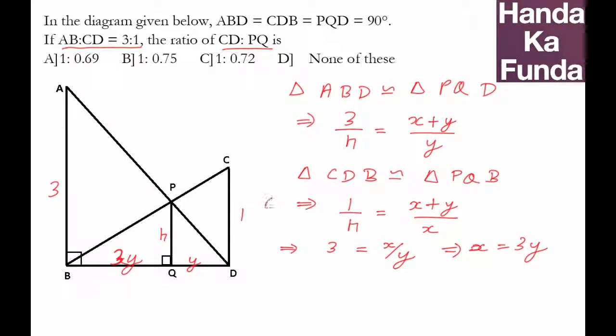So this itself, what we are taking here, was CD by PQ. And we just figured out that x is equal to 3y. So what is this? This will be 4y upon 3y, or this is equal to 1.33.